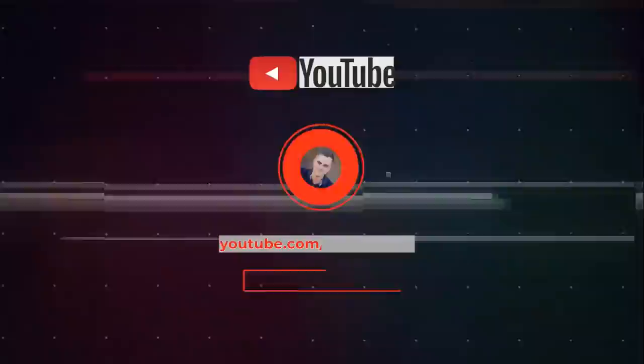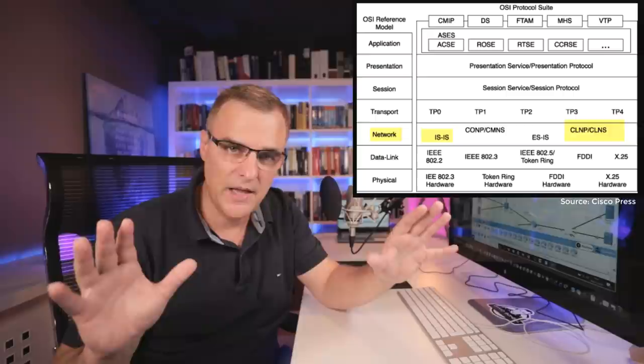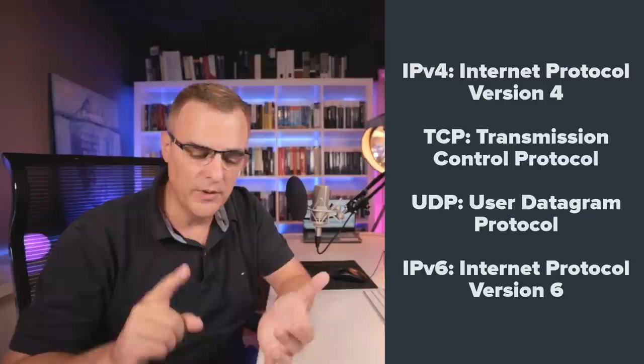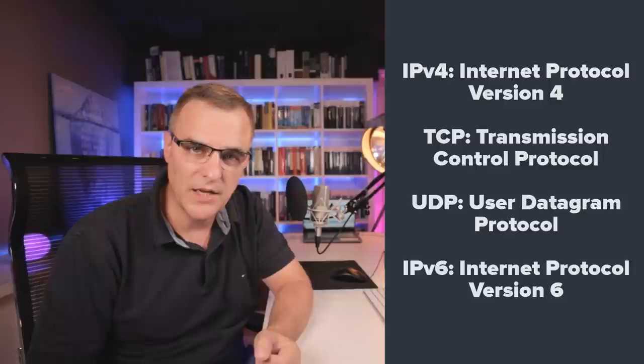There were different competing groups clashing about which protocols should win the so-called protocol wars. We had the OSI group with their protocols, and we had the TCP/IP group with their protocols — and TCP/IP basically won. For a long time, we used the OSI model to discuss TCP/IP protocols, but TCP/IP protocols are what we use in the real world: IP version four, TCP, UDP, IP version six — we use IP protocols in the real world.